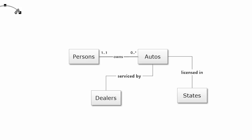Next we need to consider the multiplicities. The multiplicities tell you about the number of times one instance of one class can be associated with instances of another class. I placed multiplicities on this diagram. To read these, the first multiplicity is the minimum, the second is the maximum.